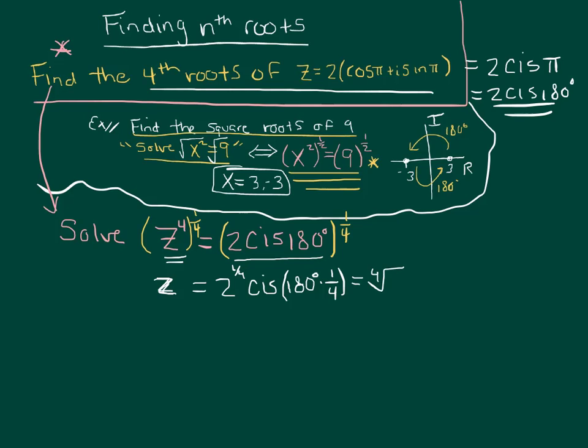So what we get is the fourth root, because that's what this means. z to the one-fourth means the fourth root, just like x to the one-half means the square root.